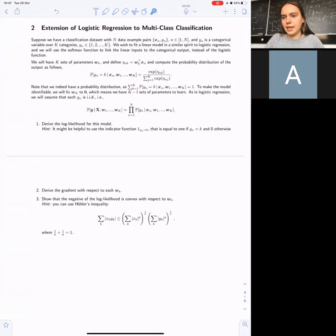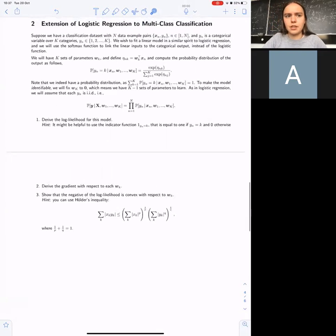Also, as in logistic regression, you assume that samples come independently, and you can write your joint distribution as a product of individual distributions of probabilities of every data point. In this question, you're asked to derive the log likelihood and the gradient with respect to wk, and prove that this log likelihood is a convex function.